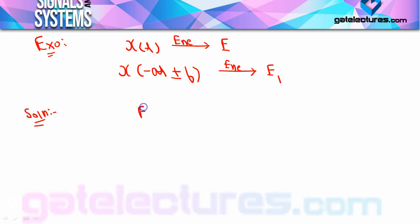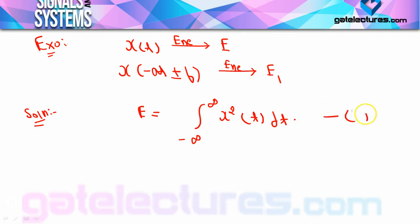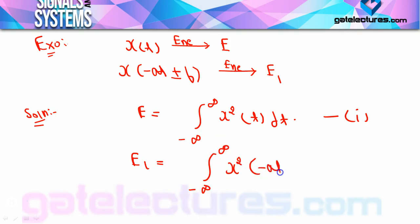We know E = ∫ from -∞ to +∞ x²(t) dt — this is given as equation 1. Now, E1 is the energy of x(-at ± b), so E1 = ∫ from -∞ to +∞ x²(-at ± b) dt, and we need to find E1 in terms of E.